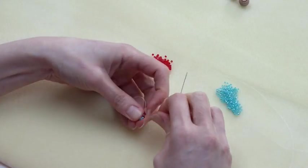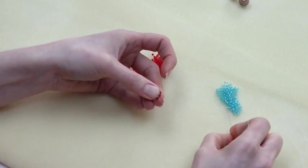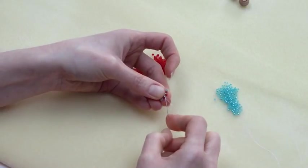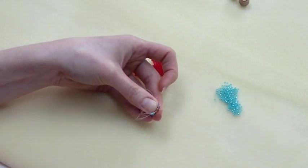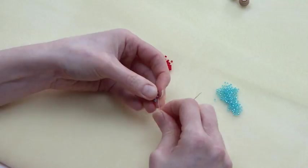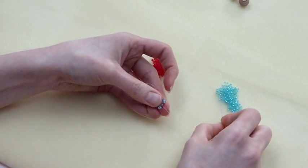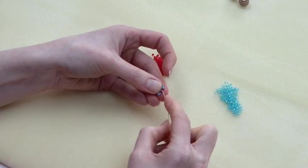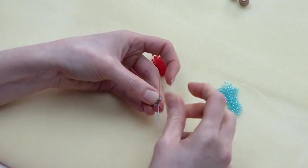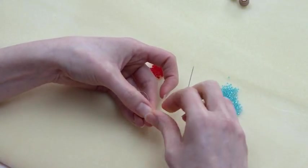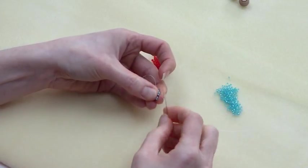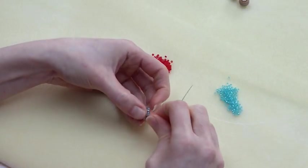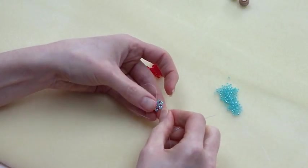And we're just going to get stitch number four in place. Again just watch the thread doesn't twist as you pull all these loops into place. Stitch number five goes in. And guess what's coming up? Stitch number six and you'll step up. So because we're now on to netting, we're going to step up through the first two beads in that first loop.